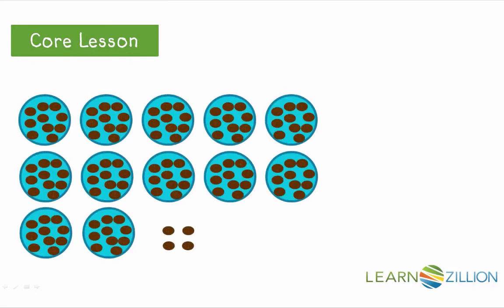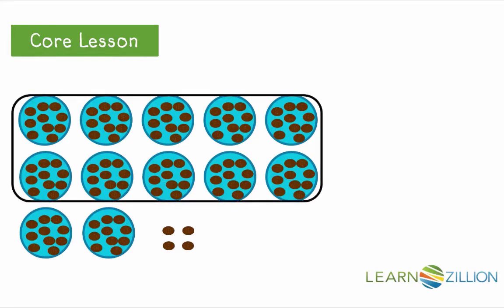Here we have another collection of cookies. This time the cookies have been put on plates in groups of 10. This means each plate has 10 cookies. Since we know 10 groups of 10 equals 100, we can combine these 10 plates together to represent a group of 100. Now we have one group of hundreds, two groups of tens, and four ones.